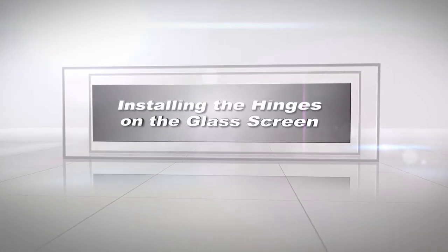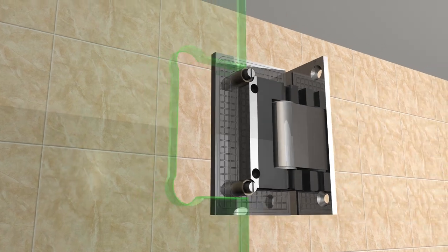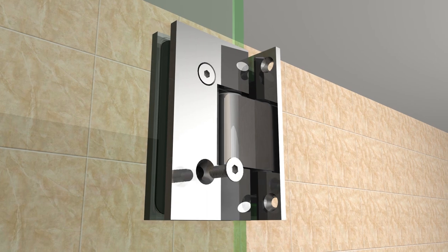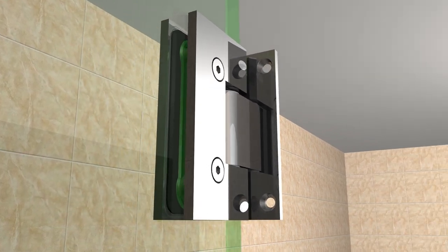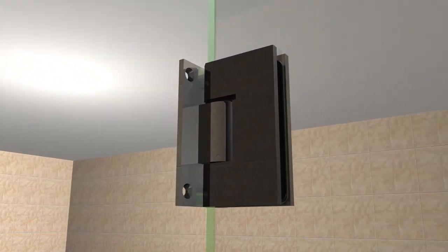Installing the hinges on the glass screen. Place the brackets onto the notches of the glass and screw them in, but do not fully tighten them, just enough so that they stay on but are still adjustable. Allen screws should be facing inside the bathtub so they are hidden from the outside view. Do the same for the top and bottom hinges.